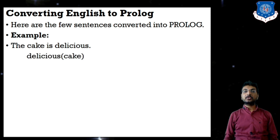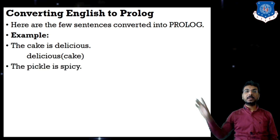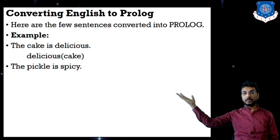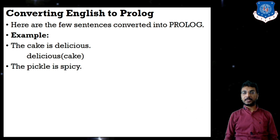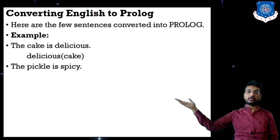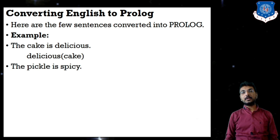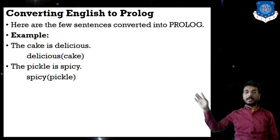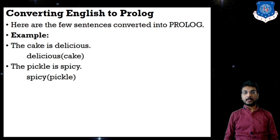The second statement is 'The pickle is spicy.' Again, pickle is my noun and spicy is my adjective. The adjective will generally be outside the function and the noun will be inside the function — the noun behaves like an argument. So that is deduced as: spicy(pickle).